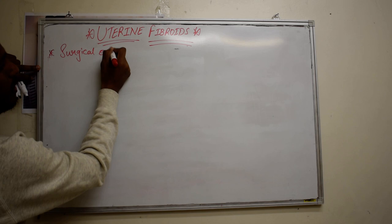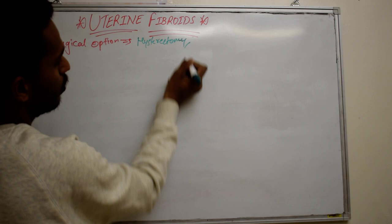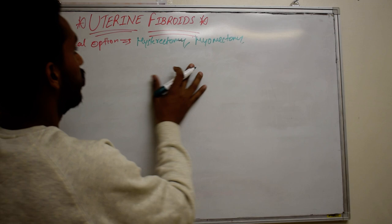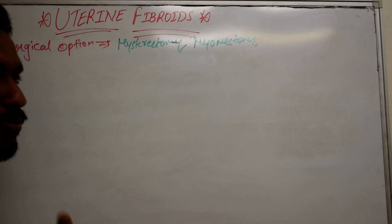What are the surgical options? Hysterectomy is the removal of the uterus. We can go for myomectomy — that is removing the myoma, the smooth muscles of the fibroid along with the fibroid, in order to preserve the uterus so the patient can become pregnant in future.